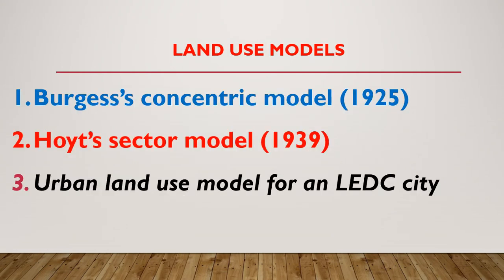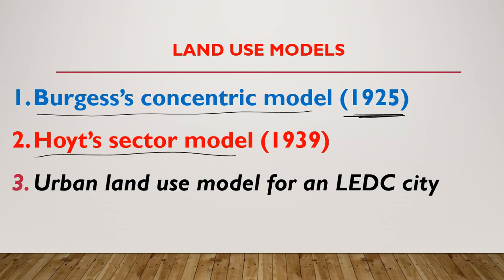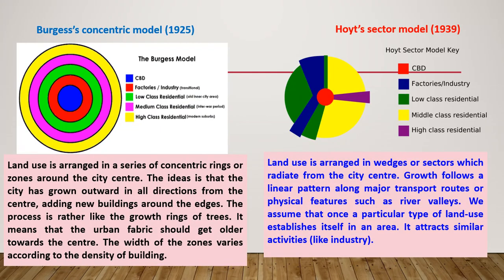An urban land use model is a theoretical picture which suggests where you might find land use within a town and city. There are three models we'll look at: the Burgess Concentric Model of 1925, the Hoyt Sector Model of 1939, and the urban land use model of an LEDC city.